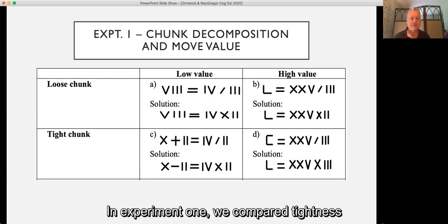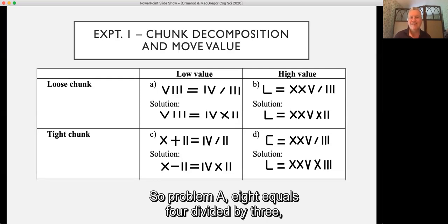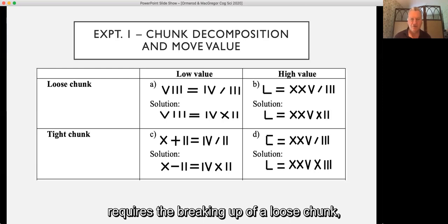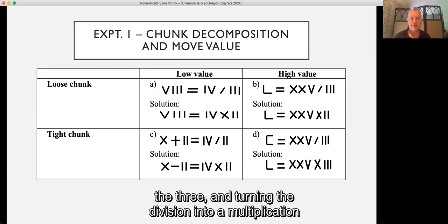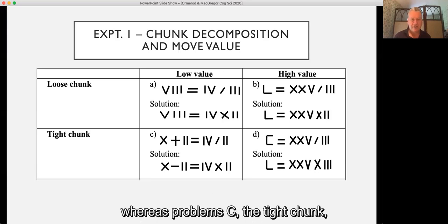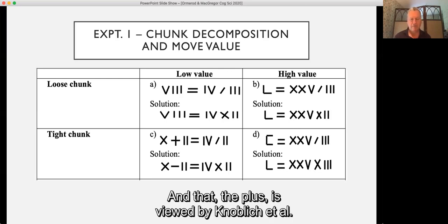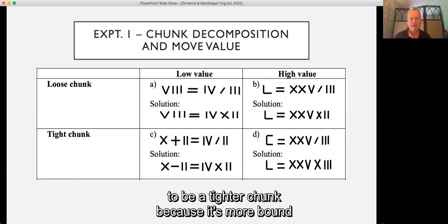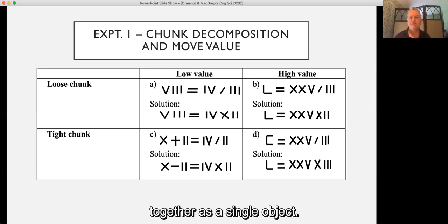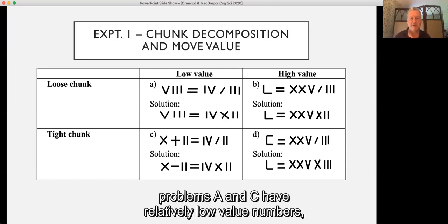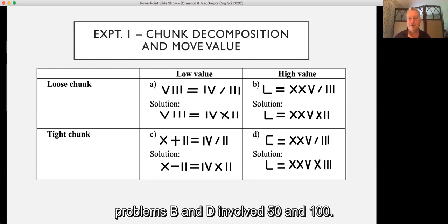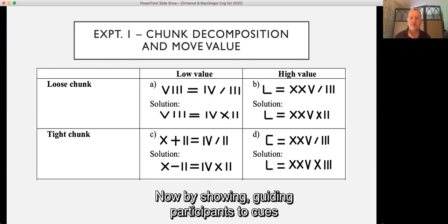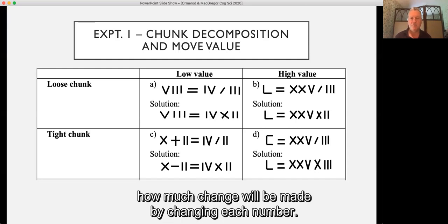In experiment one we compared tightness of chunk against value. So problem A, VIII = IV ÷ III, requires the breaking up of a loose chunk, the 3, and turning the division into a multiplication. Whereas problem C, the tight chunk, requires the breaking up of an operator, plus, to release a match. And the plus is viewed by Knoblich et al. to be a tighter chunk because it's more bound together as a single object. We also manipulated values. So whereas problems A and C have relatively low value numbers, problems B and D involve 50 and 100, thereby guiding participants to cues as to how much change will be made by changing each number.